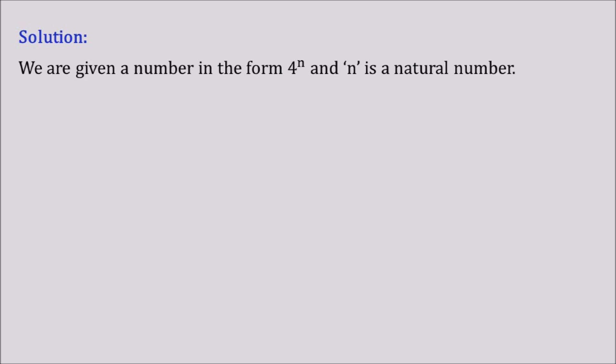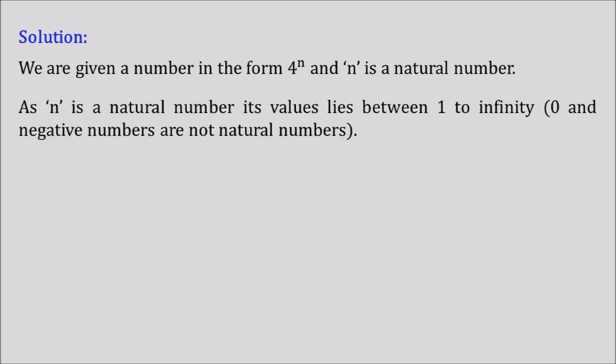We are given a number in the form 4^n and n is a natural number. I believe by this time you would have known what is a natural number, but still let me brush up. As n is a natural number, its values lie between 1 to infinity. A natural number starts from 1 till infinity but does not include 0 and negative numbers.